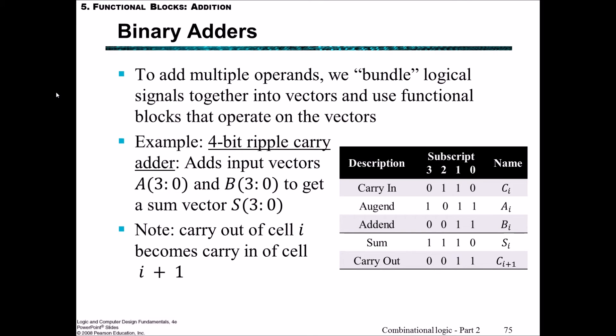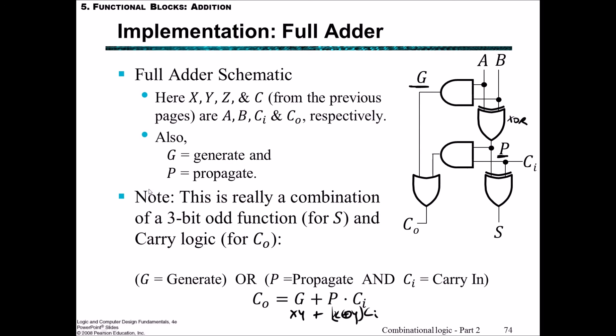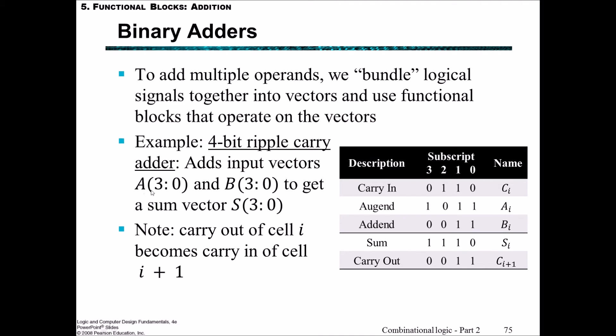To make these adders easier to use, we'll often bundle logical signals together into vectors and use functional blocks that operate on vectors rather than individual signals. An example is a 4-bit ripple carry adder, which adds the input vectors A(3:0) and B(3:0) to get a sum vector S(3:0). This is why on the previous slide we started using the terminology of A and B.